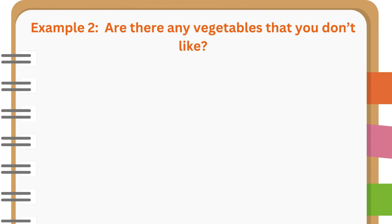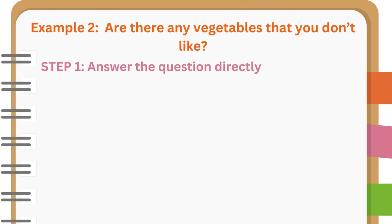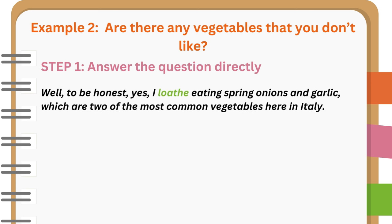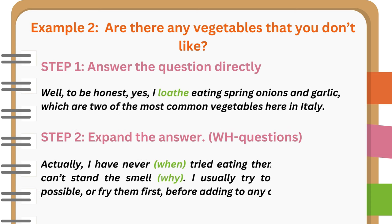Example 2: Are there any vegetables that you don't like? Well, to be honest, yes. I loathe eating spring onions and garlic, which are two of the most common vegetables here in Italy. Actually, I have never tried eating them fresh because I can't stand the smell. I usually try to replace them, if possible, or fry them first before adding to any dish.